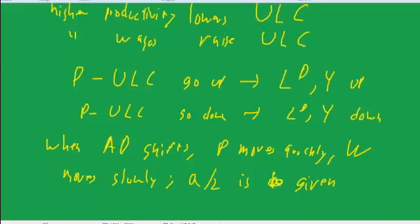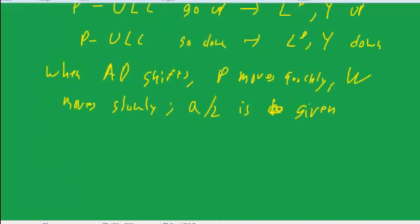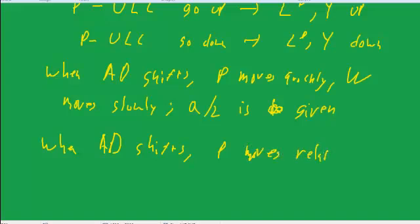So the result of that is whenever aggregate demand shifts, price moves relative to unit labor cost. Because wages are going to move slowly, they're going to stay about where they were. Productivity is given, and so all the action is in prices relative to unit labor costs.